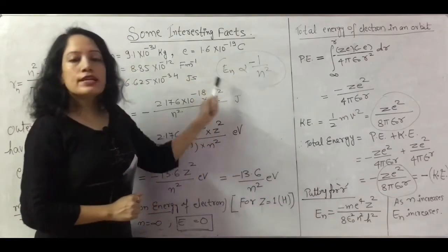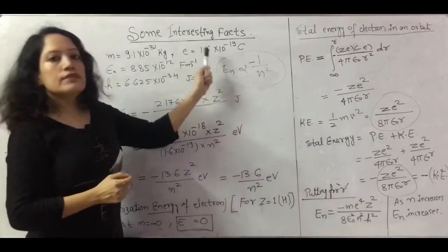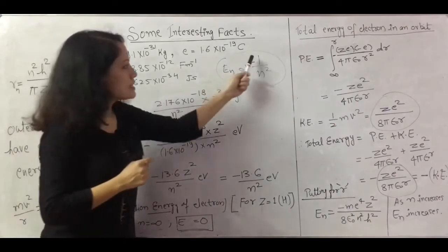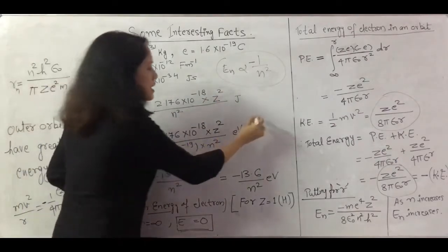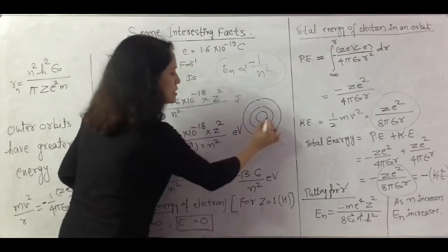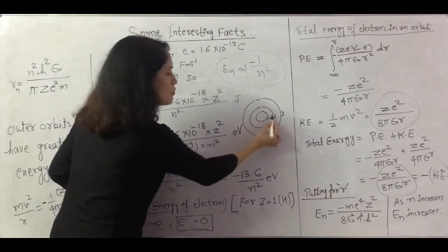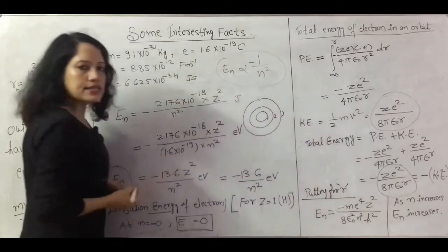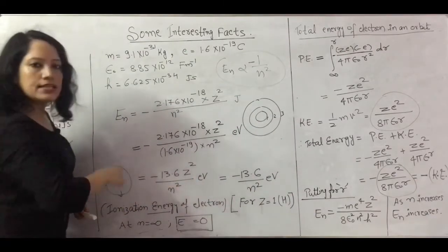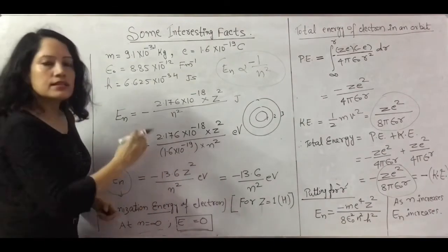From this relation, as n increases the energy of the electron also increases. This is because of the negative sign — as the electron moves away from the nucleus its energy starts increasing. However, the magnitude of the energy decreases as n increases. So as the electron moves to outer orbits, the magnitude of its binding energy decreases while its total energy becomes less negative.